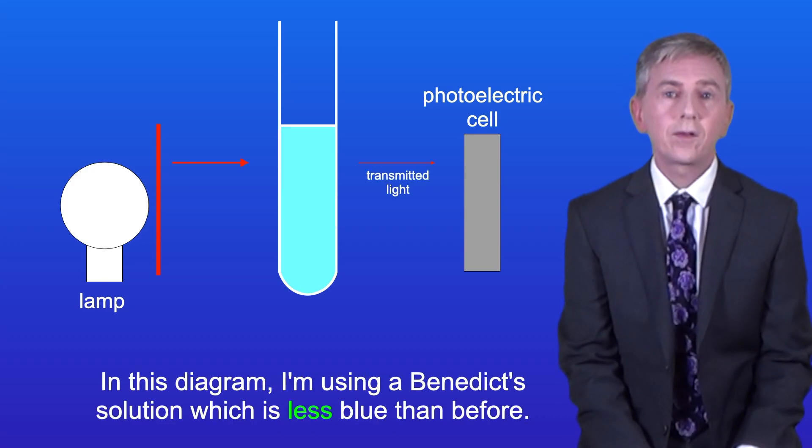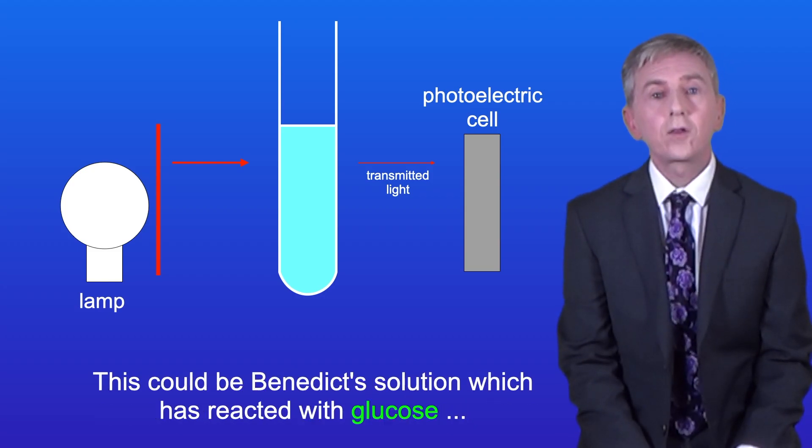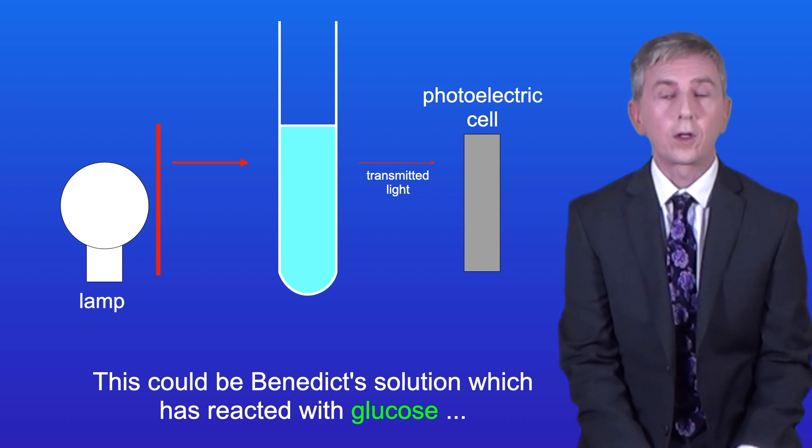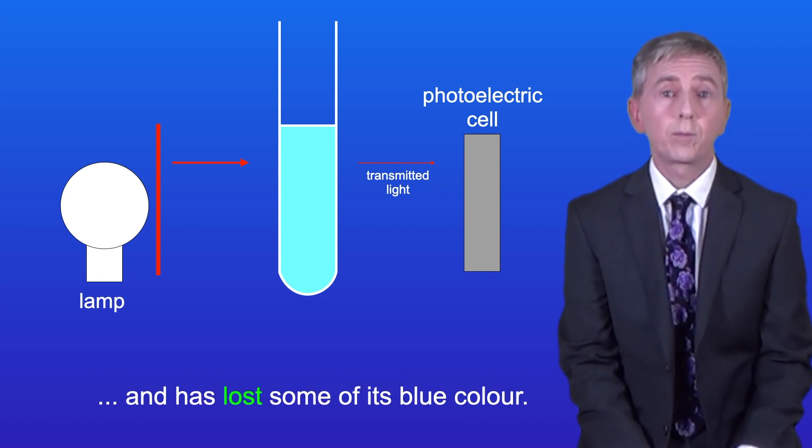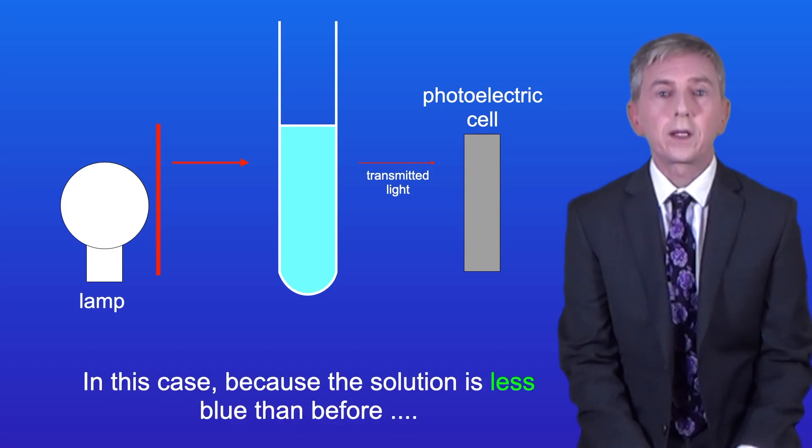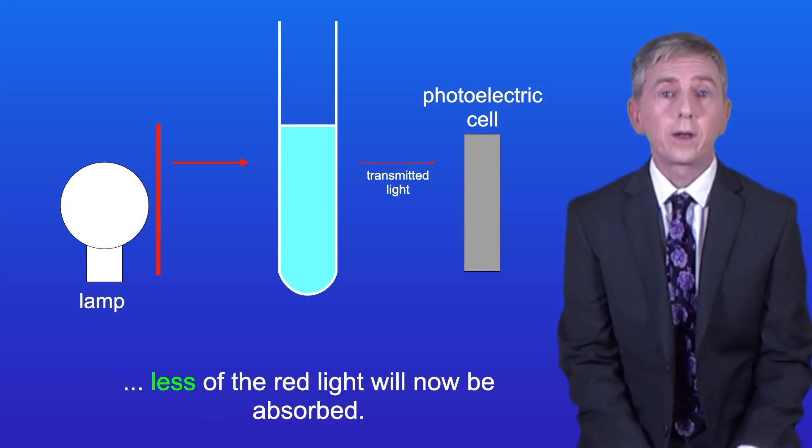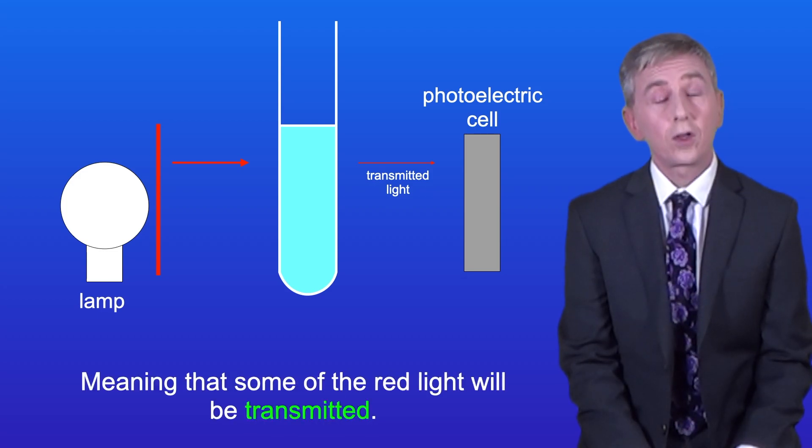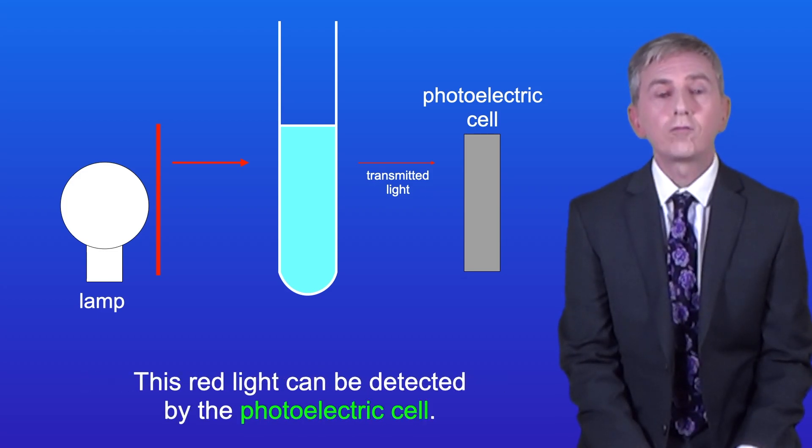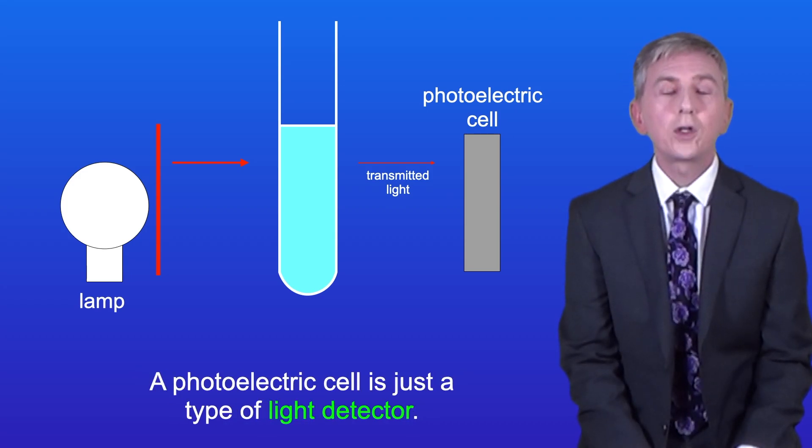Okay, now in this diagram I'm using a Benedict's solution which is less blue than before. This could be Benedict's solution which has reacted with glucose and has lost some of its blue color. In this case, because the solution's less blue than before, less of the red light will now be absorbed, meaning that some of the red light will be transmitted. And this red light can be detected by the photoelectric cell. A photoelectric cell is just a type of light detector.